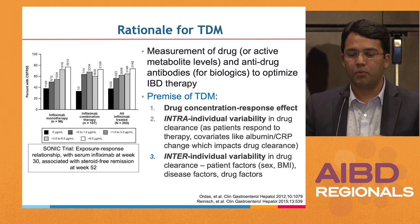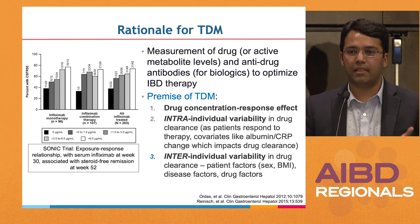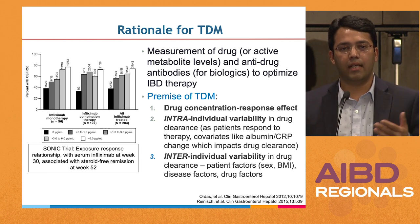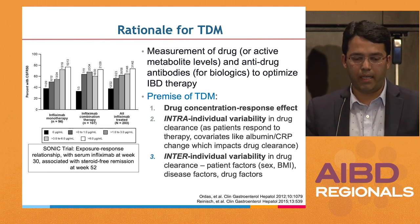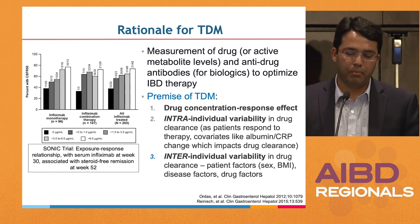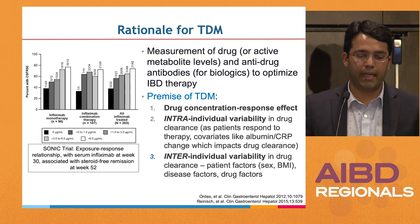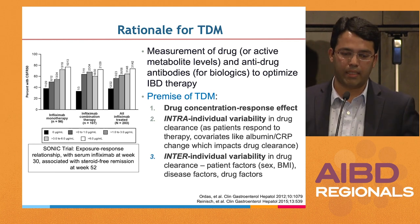There is intra-individual variability in drug clearance. Depending on the patient's clinical status — their CRP, their albumin — as these change, it can significantly impact drug clearance, meaning within the same individual there may be variation in drug clearance over time. There is also inter-individual variability with multiple factors including sex, disease-related factors, and drug-related factors.